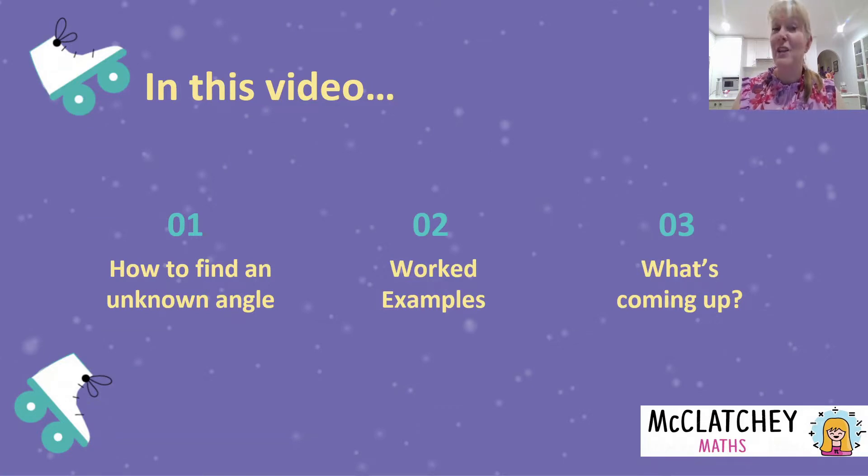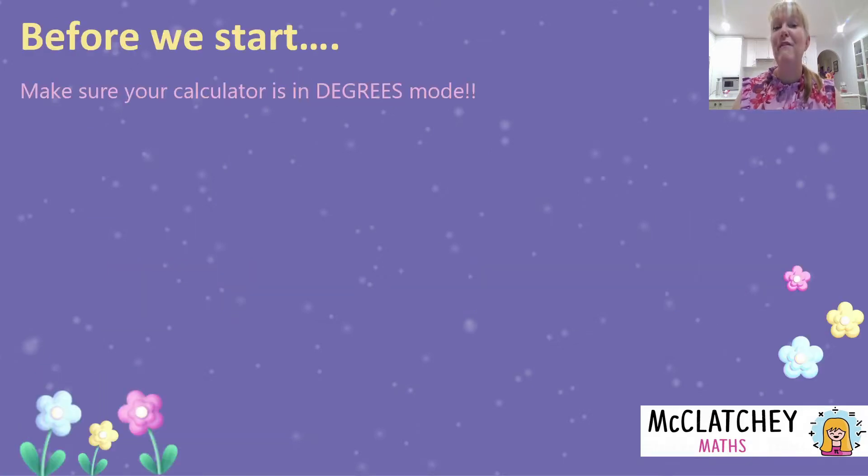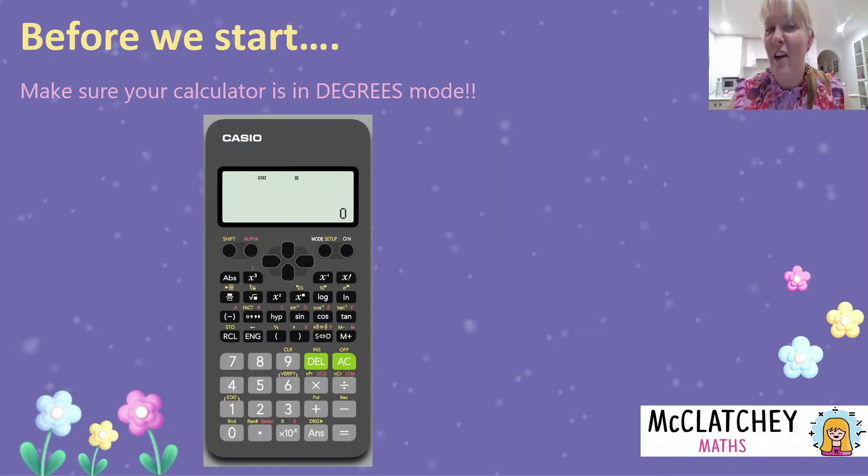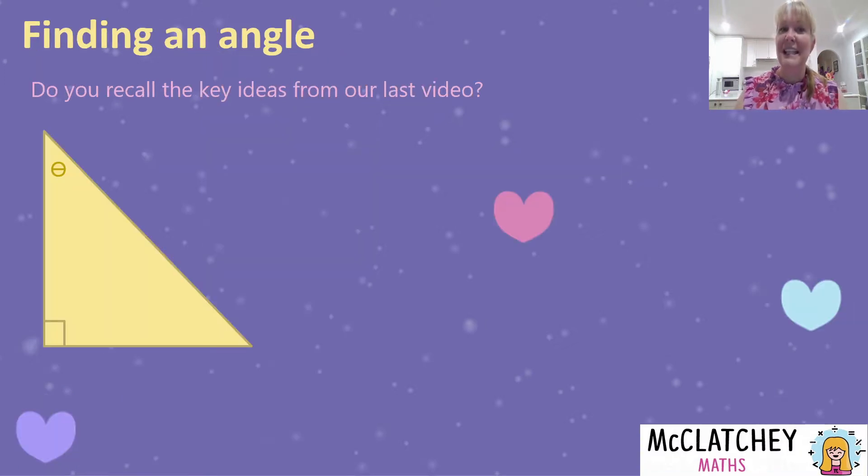We're going to look at some worked examples and then talk about what's coming up next. But before we get started, why don't you just quickly check and make sure your calculator is in degrees mode. We did cover how to do this a couple of videos back, but if you have a calculator it might look a little differently to this one. Just make sure that there's a little d in the top window. If you've got a little r you need to change into degrees mode. So let's get started.